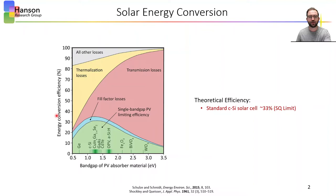So what is photon upconversion and why do we care about it in terms of solar energy conversion? To begin, let's look at this plot that shows the energy conversion efficiency versus the band gap energy of the absorber material. You can see commercial single junction silicon solar cells with a 1.1 eV band gap have a maximum theoretical efficiency of around 33%, known as the Shockley-Queisser limit.